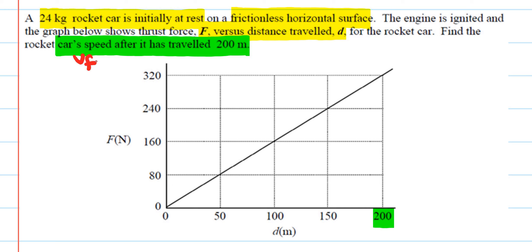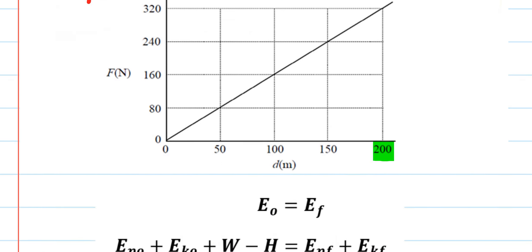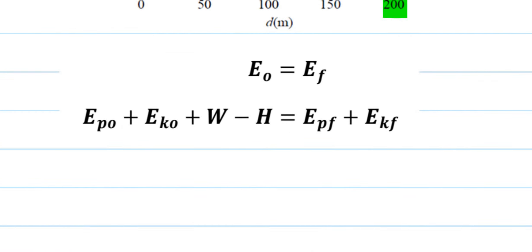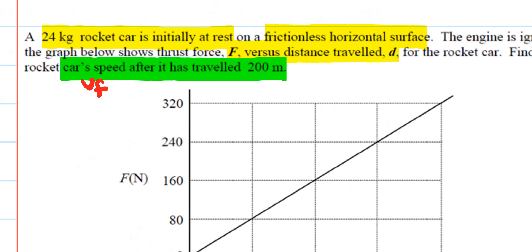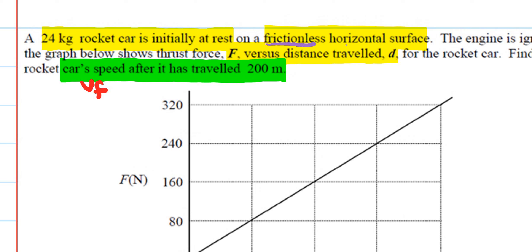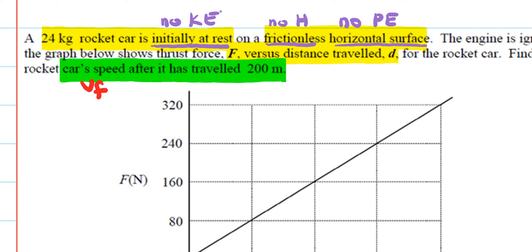For this problem we again set up the work-energy theorem: energy at the beginning equals energy at the end. Since it's a frictionless horizontal surface, there is no potential energy because there is no height, and there is no heat energy from friction. We're also told the object starts at rest, so there is no kinetic energy at the beginning because the initial speed is zero.